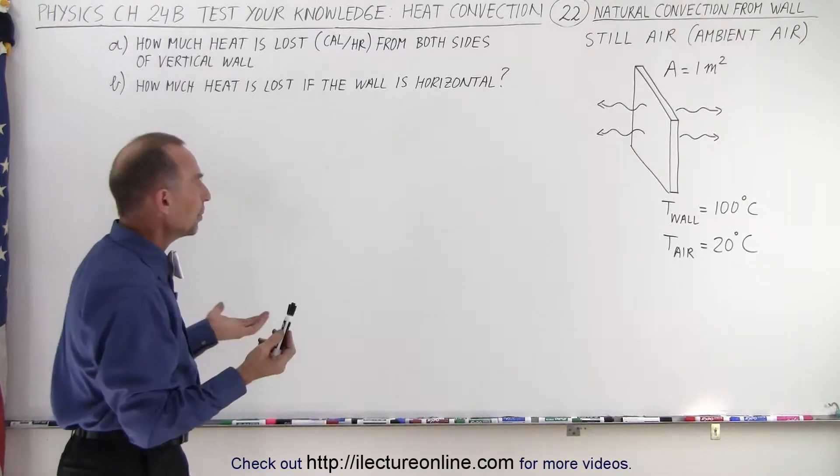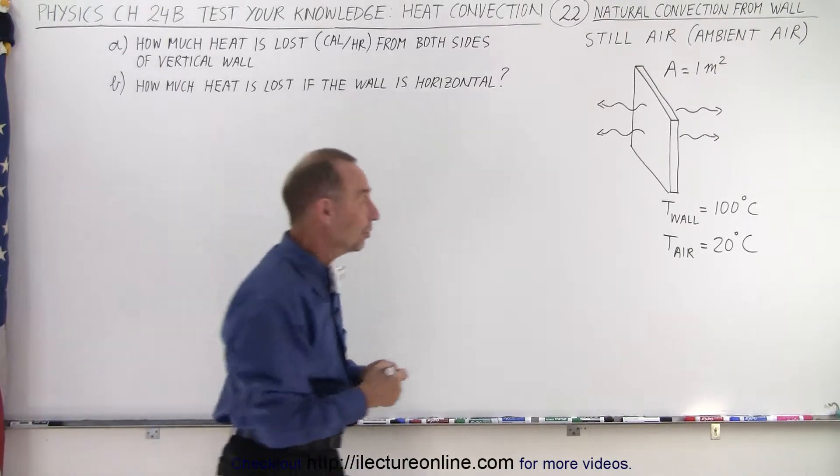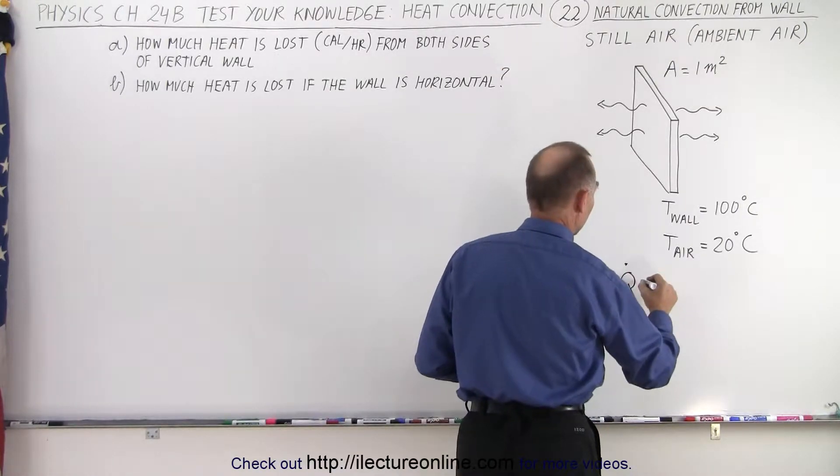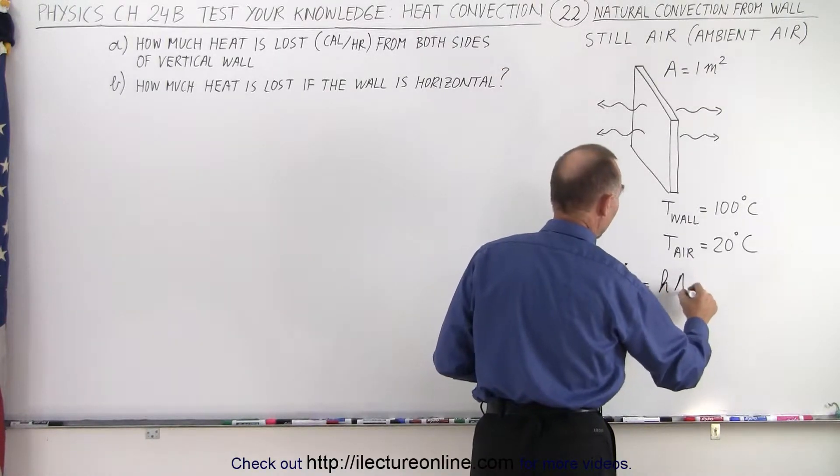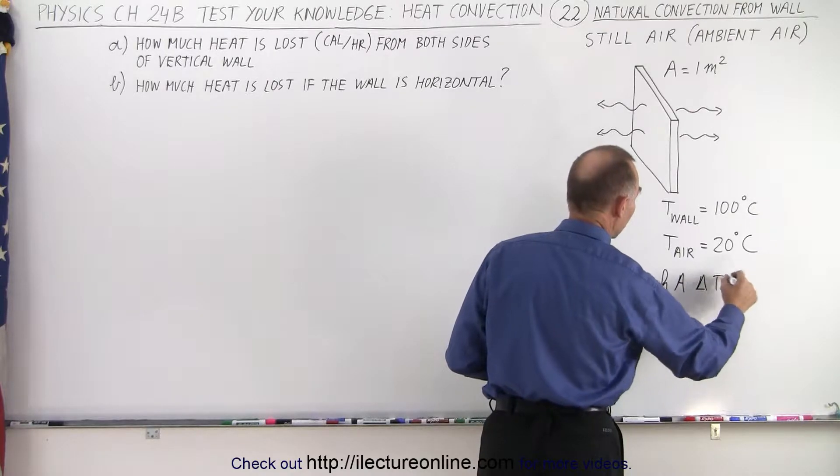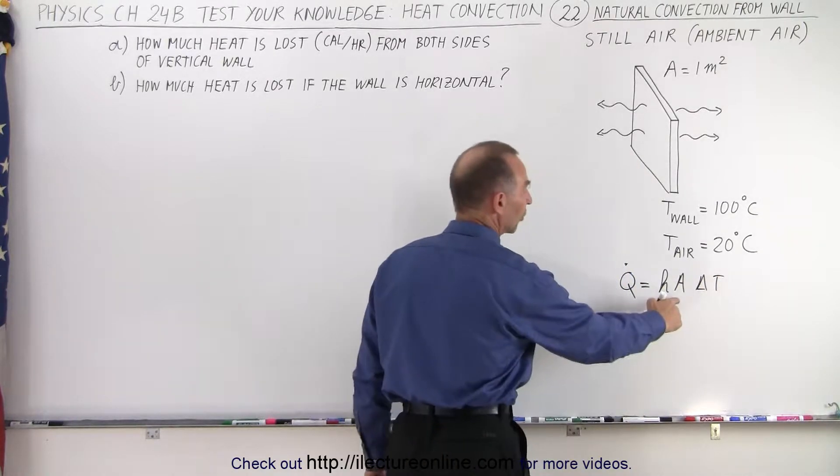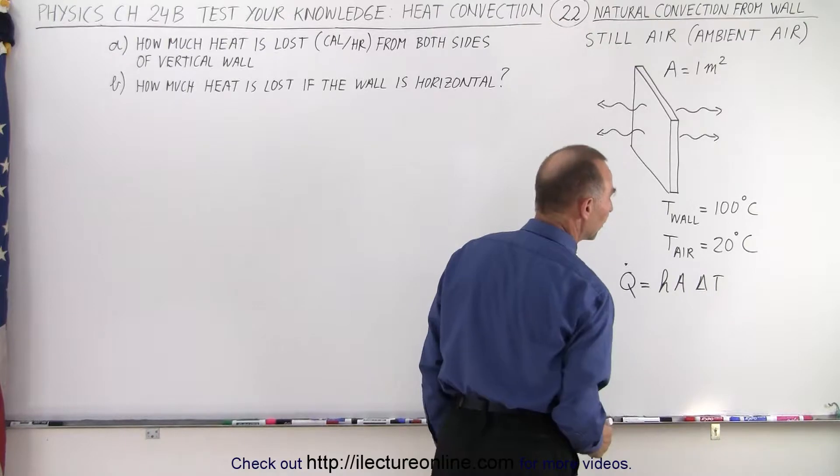What we need to do is we need to come up with an equation, and the equation we can use would be Q dot equals H times A times delta T. So the transmission coefficient, the surface area, and the difference in temperature.